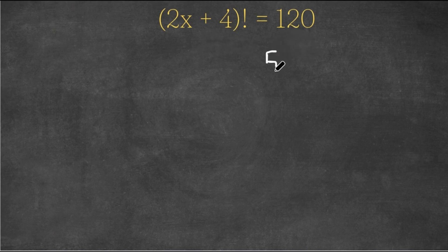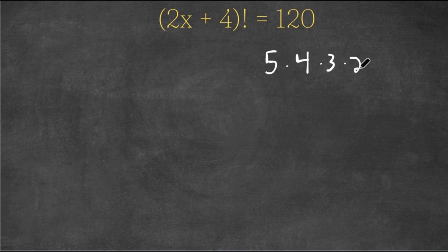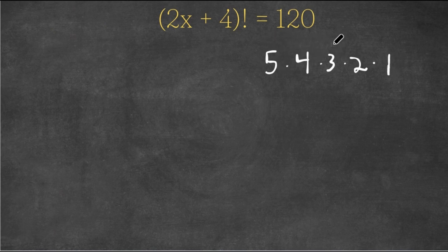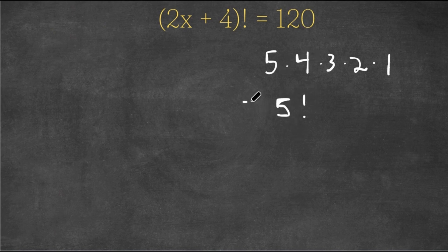Now 120 is the same thing as 5 times 4 times 3 times 2 times 1, and this is simply just 5 factorial, because it's 5 times itself minus 1 going on until 1. So 120 is simply just equal to 5 factorial.